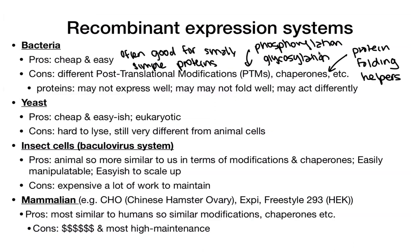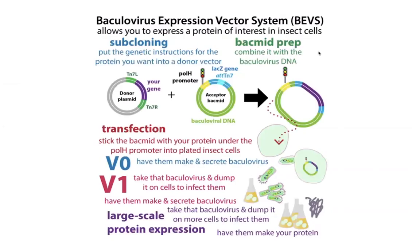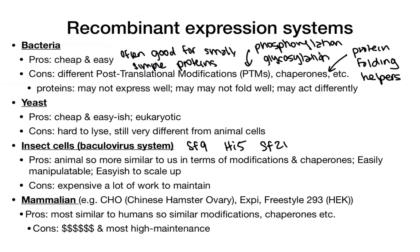Another commonly used method is insect cells using the baculovirus system — you might see cell lines like SF9, HI5, or SF21. Insect cell expression is more similar to us in terms of modifications and chaperones, it's easily manipulatable, and easiest to scale up. However it requires more maintenance and is more expensive than bacteria. Basically, you use bacteria to make a virus that can only infect insect cells, then infect those insect cells to get them to produce a lot of your protein. A lot of the prep work can be done in bacteria, but then you have to switch to the insect cells.